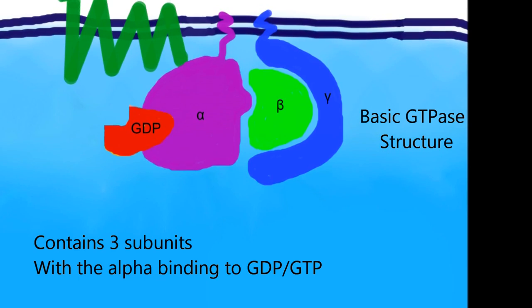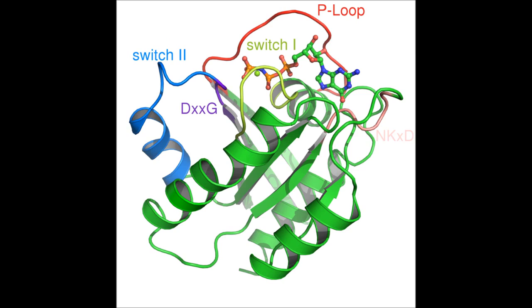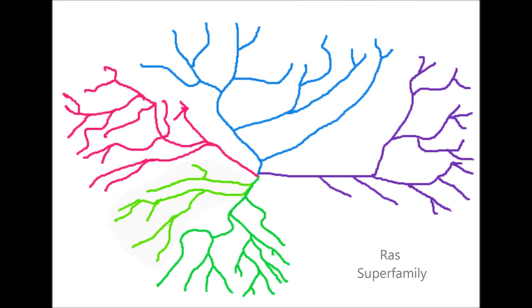Not to be confused with the heterotrimeric G proteins, all small GTPases belong to a large family with the archetypal member being RAS. The RAS superfamily GTPases